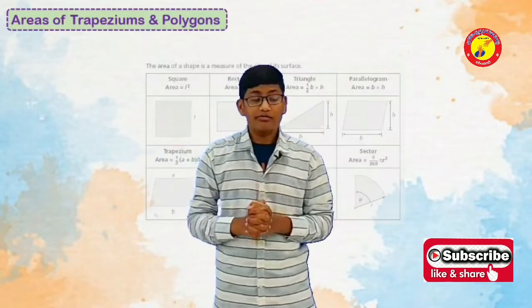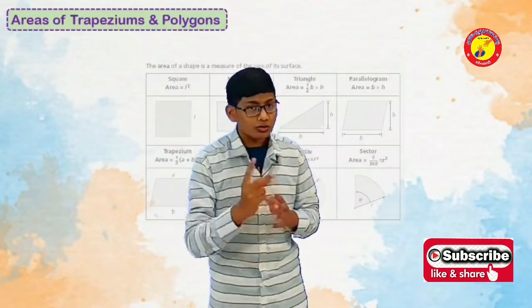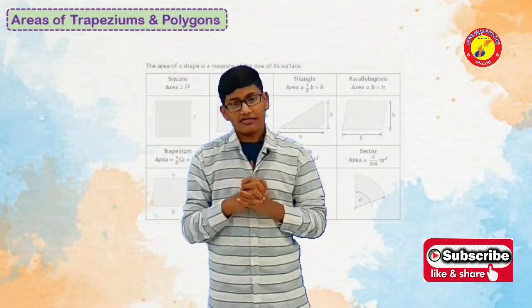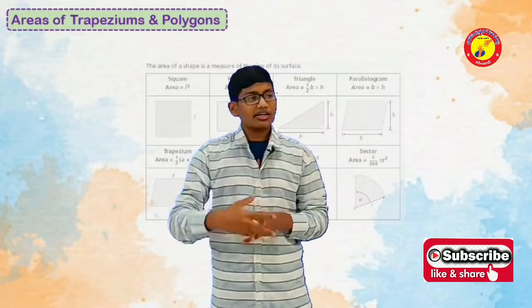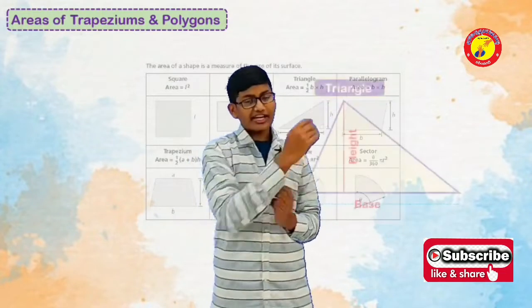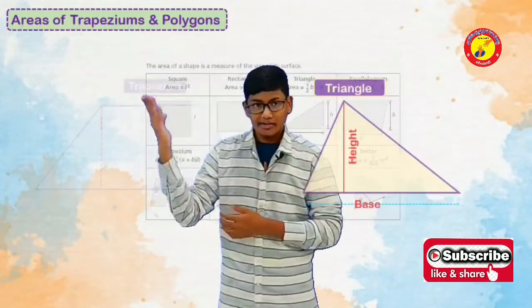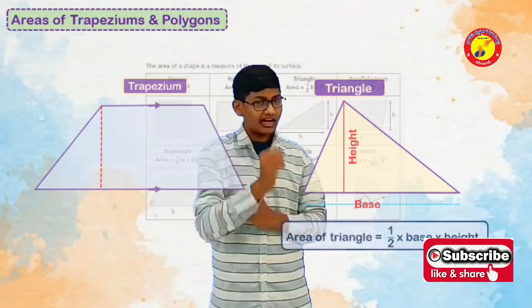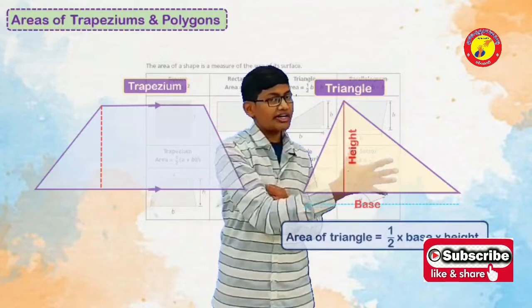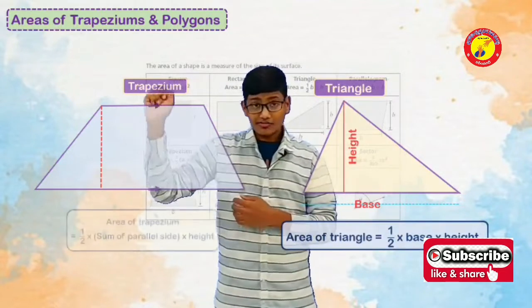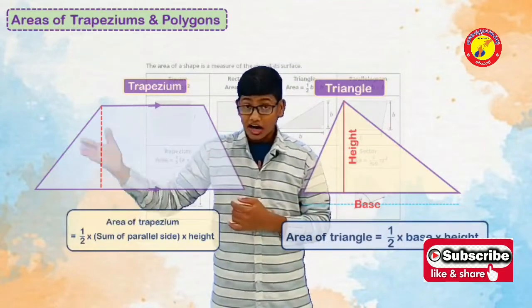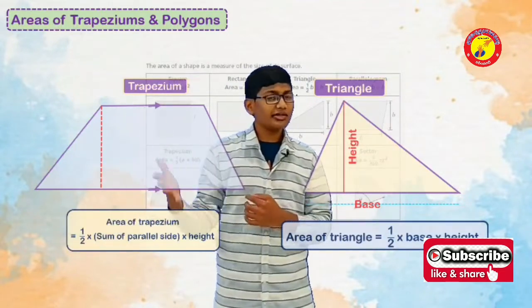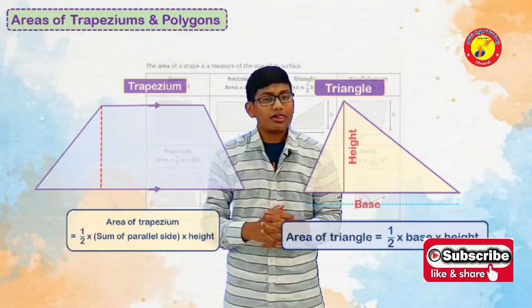To attempt this problem we need to know two formulas. They are nothing but area of triangle and area of trapezium. Area of triangle: half into base into height. Area of trapezium: half into sum of parallel sides into height.